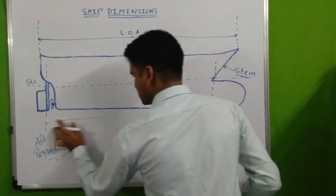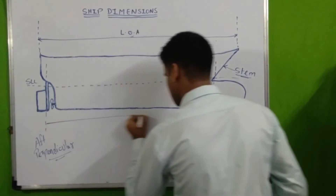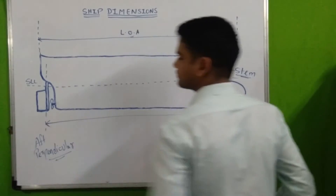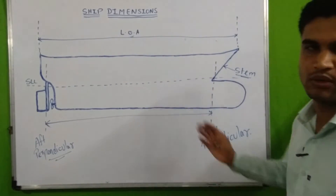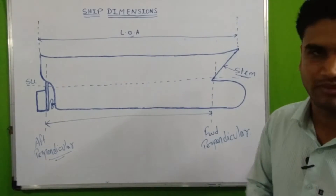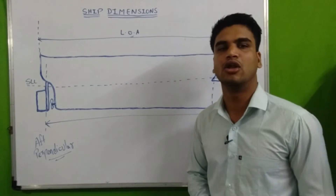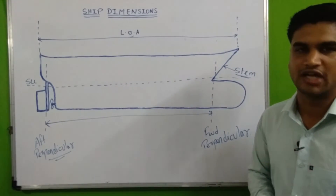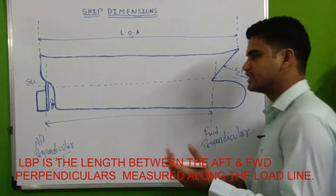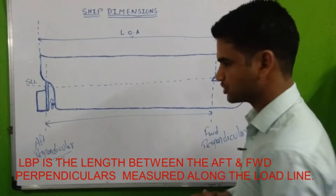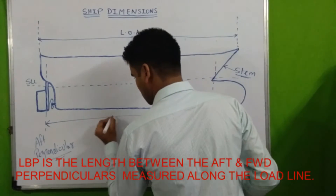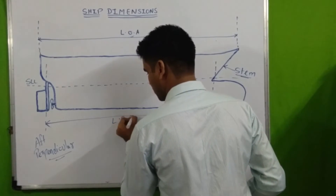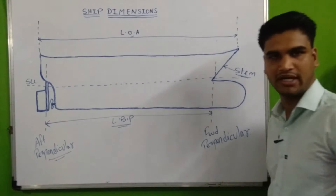Length between perpendiculars (LBP) means the distance between the forward perpendicular and the aft perpendicular. It is measured along the load line and it is used for calculating drafts. We will discuss about drafts in the stability portion.